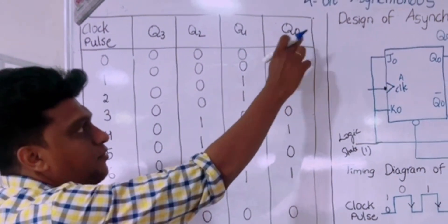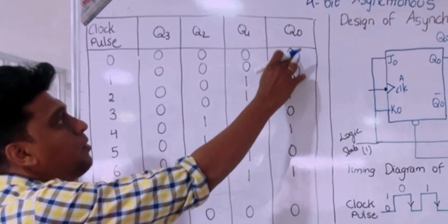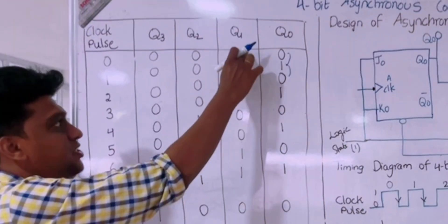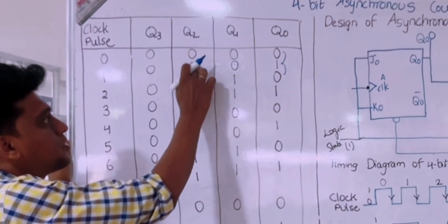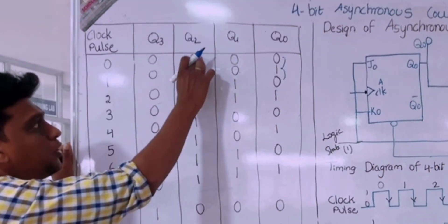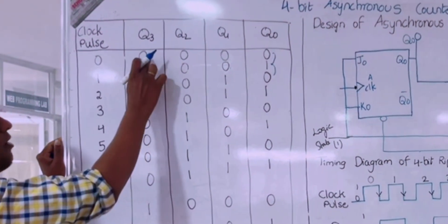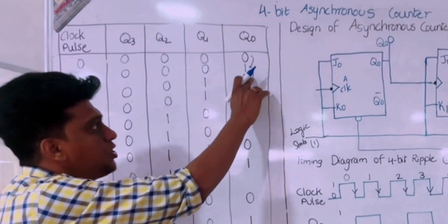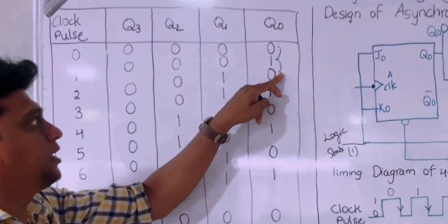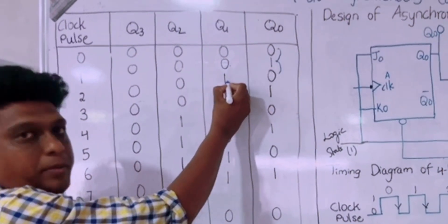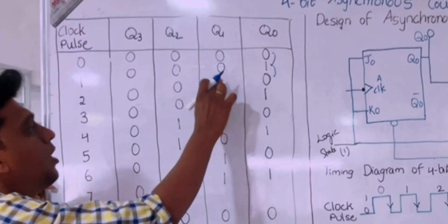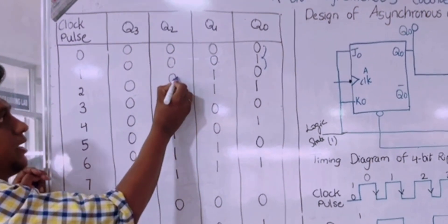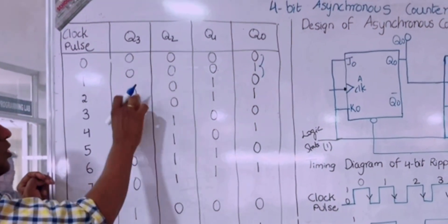Starting from 0000 — when the first clock pulse is applied, Q0 becomes 1. The transition in Q0 is 0 to 1, so Q1 remains unchanged at 0. Q2 also has a 0-to-0 transition, so Q2 stays 0. Similarly Q3 stays 0, giving state 0001. In the next stage, Q0 goes from 1 to 0, so Q1 gets complemented from 0 to 1.